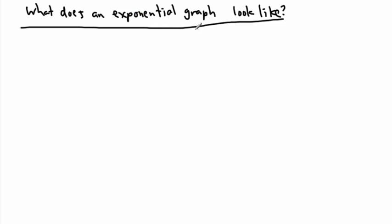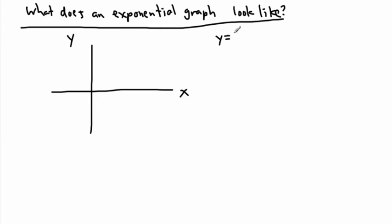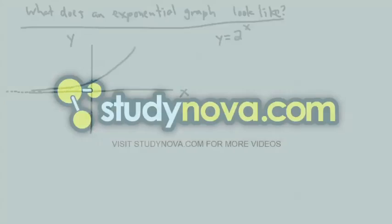What does an exponential graph actually look like? Let's say we graph y equals 2 to the power of x. It goes kind of like that — it has an asymptote here. In other words, it reaches infinitely close to the x-axis. This is something that grows exponentially. This is an example of an exponential graph. You can have them negative and all sorts of different variations, but I just want to show you what an exponential graph can look like.